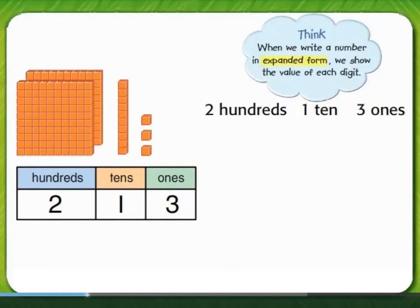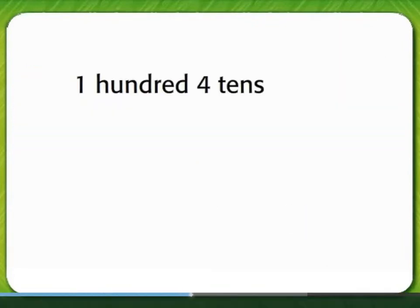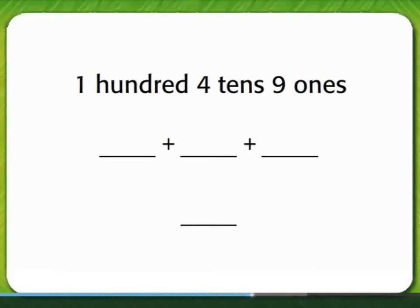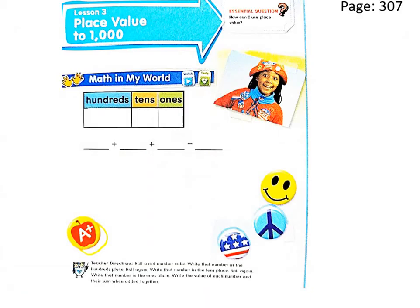So two hundred plus ten plus three is two hundred thirteen. Let's write one hundred, four tens, nine ones in expanded form. What do we write in the first blank? One hundred. How do you write four tens? Forty. How do we write nine ones? Nine. And the number is one hundred forty-nine.